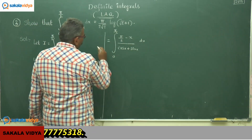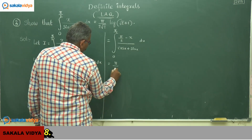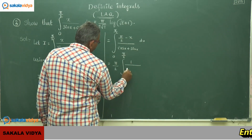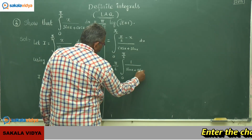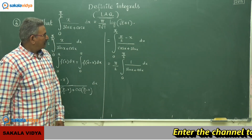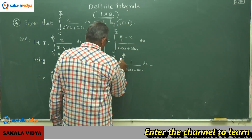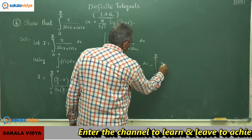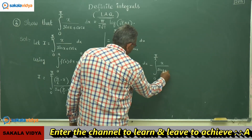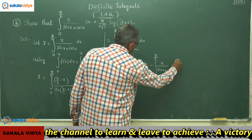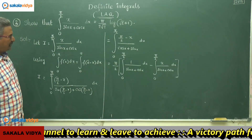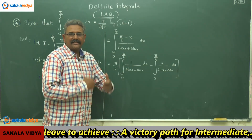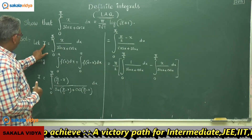We can split this as π/2 times the integral from 0 to π/2 of 1/(sin x + cos x) dx minus the integral from 0 to π/2 of x/(sin x + cos x) dx. Notice that the second integral is just the original problem, which is I.